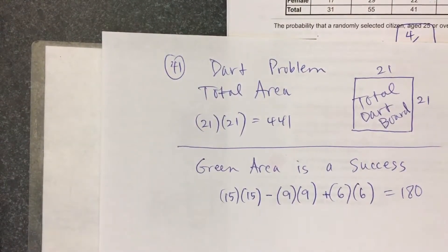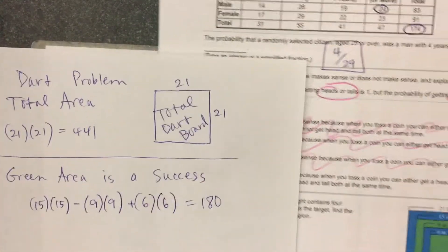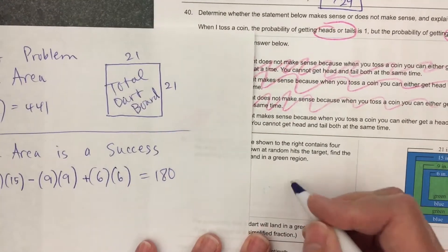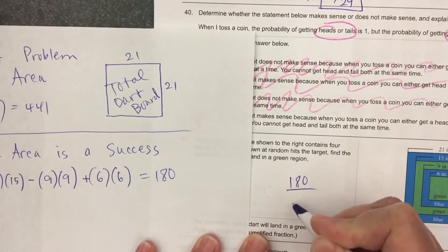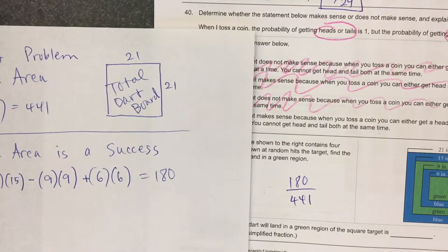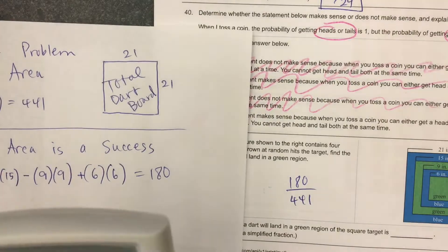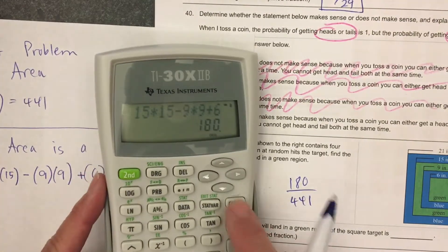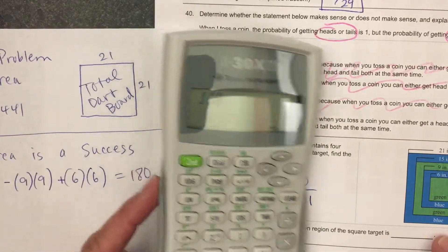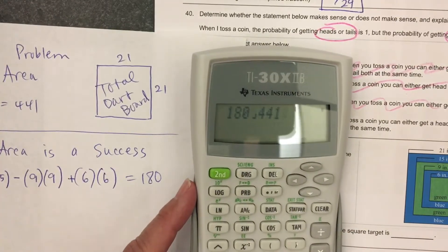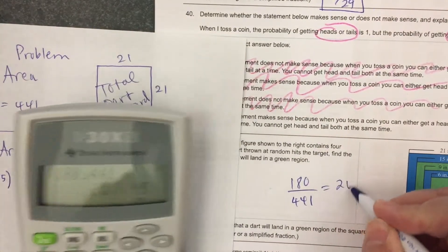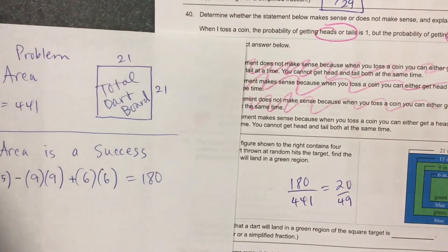So the probability that the dart hits the green area is 180 divided by 441. You do need to reduce this. I'll use my fraction key, 180, fraction key, 441. I got 20 over 49. That's the answer, two questions done.